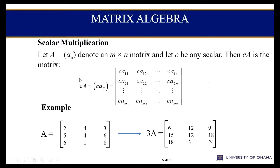Scalar multiplication simply says that if you have any given matrix, you can pick any number — whether positive or negative — to multiply the matrix that you have. When doing this, you start from rows first, doing it row by row.